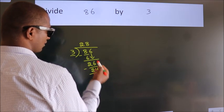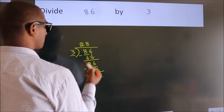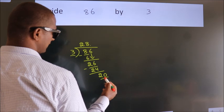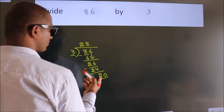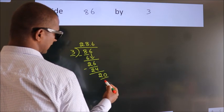After this, no more numbers to bring down. So what we do is, we put dot, take 0. So 20. A number close to 20 in 3 table is 3 6s, 18.